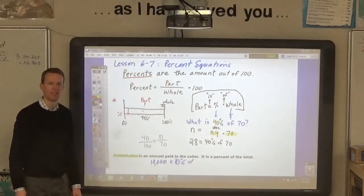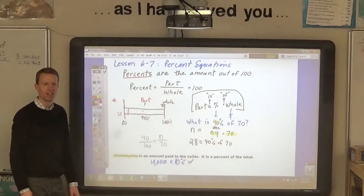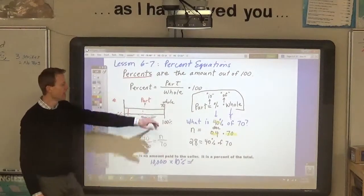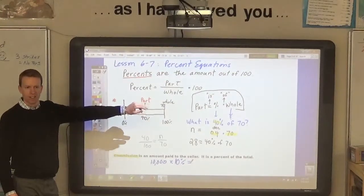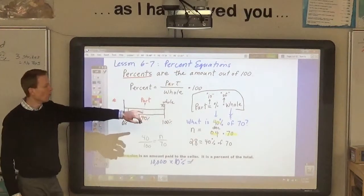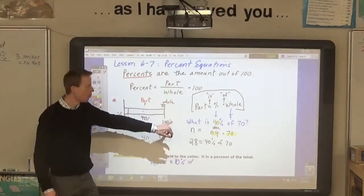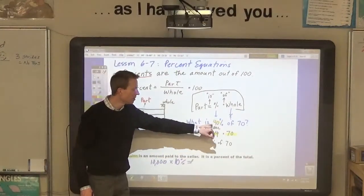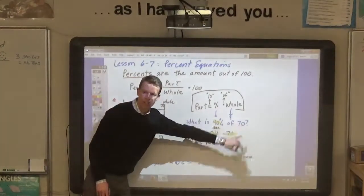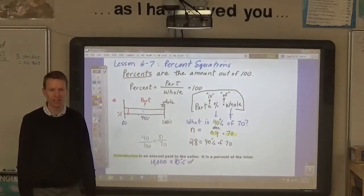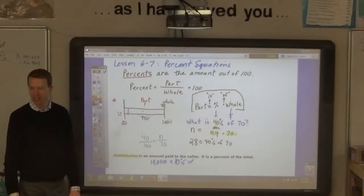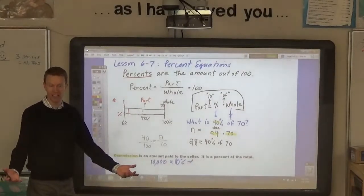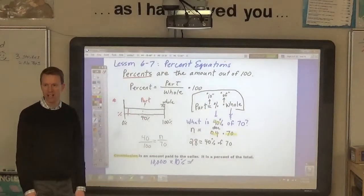How would you find that? How would you find that using is and of? You can put that into an equation like this. What is 10% of $10,000? So, if you sell $10,000 worth of windows in one day, that's a pretty good day, right?